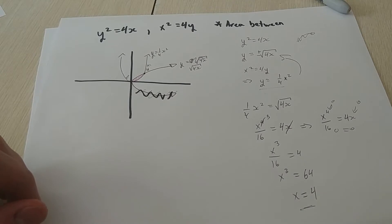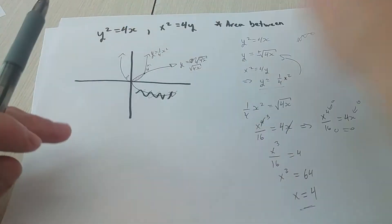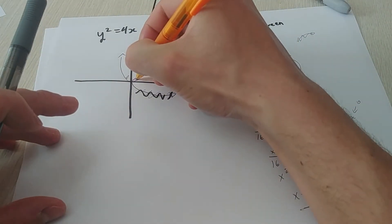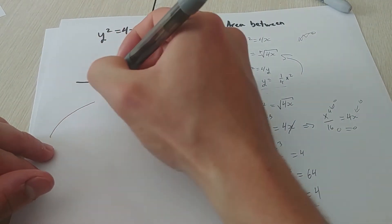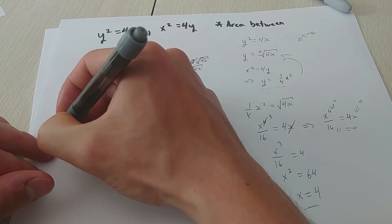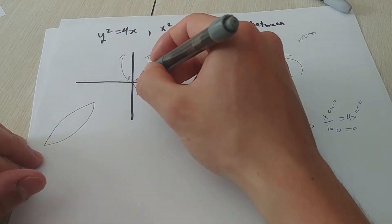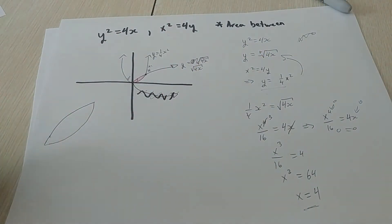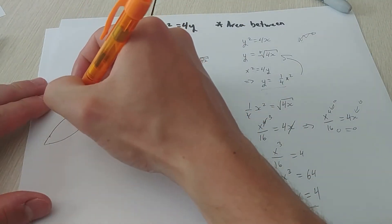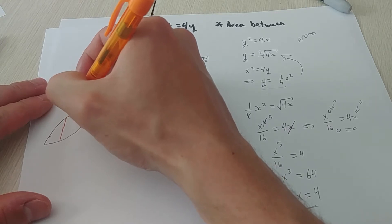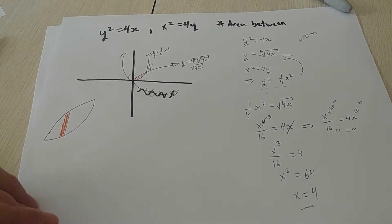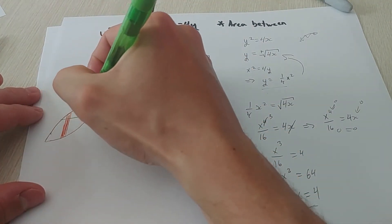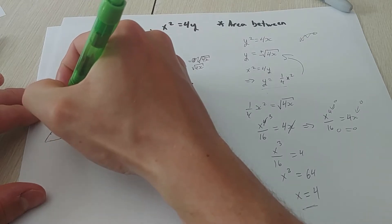There are two ways to do this integral. We can make vertical rectangles everywhere and sum them up using the integral sign, or we can make horizontal rectangles — the same concept but rotated 90 degrees. I'll show you both ways.